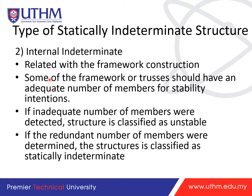Type two is internally indeterminate, related to framework construction. A truss must have an adequate number of members for stability and intentions. If the number of members is inadequate, the structure is classified as unstable. If there are redundant members — more than enough — then the structure is classified as indeterminate.